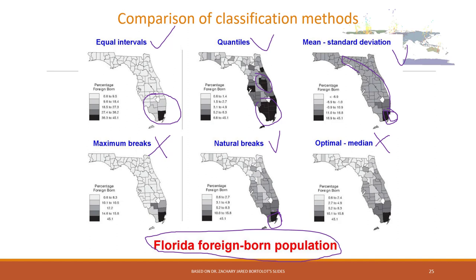The question you should always ask yourself is which type of data classification you should choose. Unfortunately, there is no one method that fits all scenarios — it really depends on the specific project you are working on and the specific question you are trying to explain. It is ultimately up to you, the creator of the map, to choose the appropriate classification method.